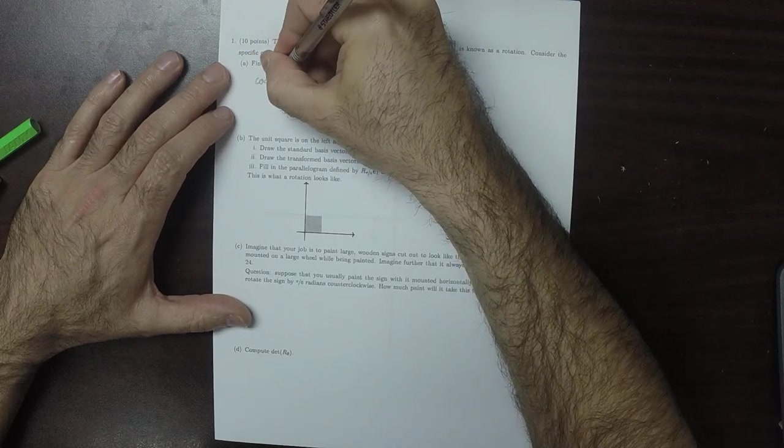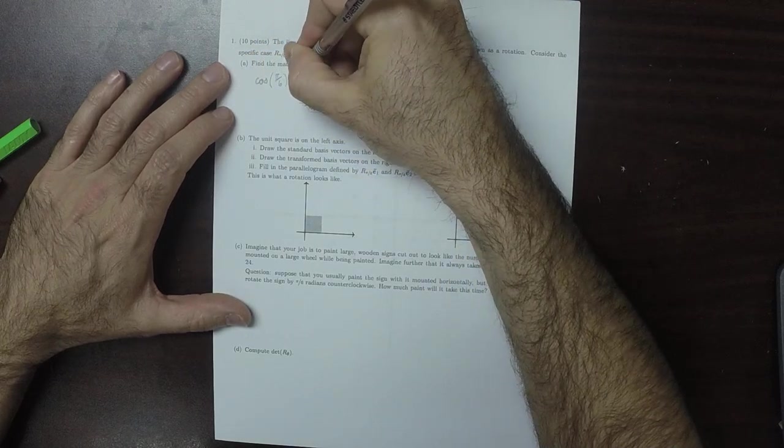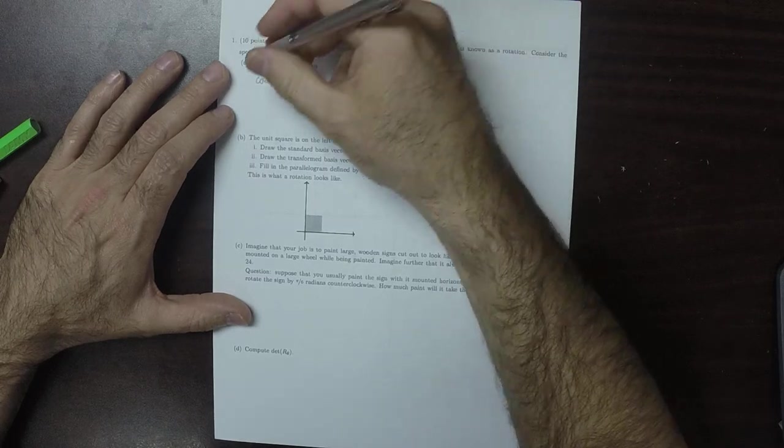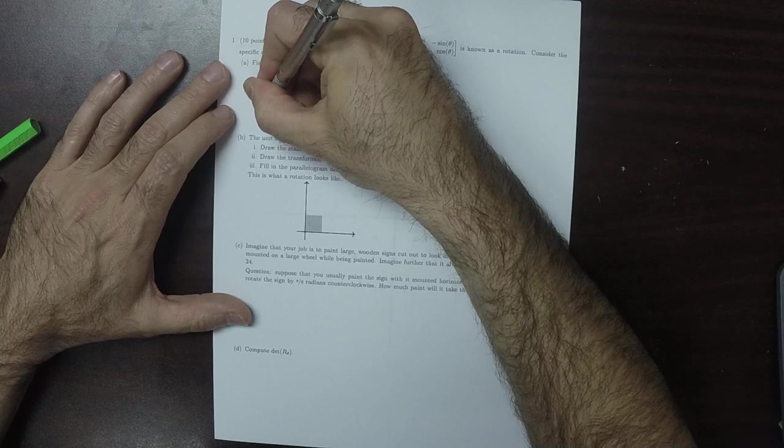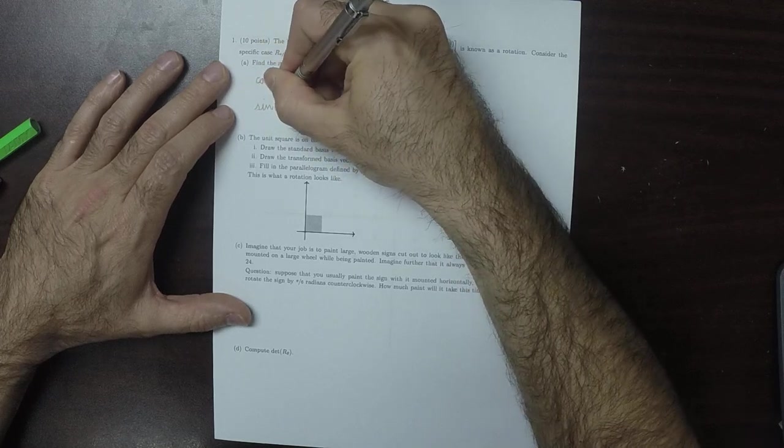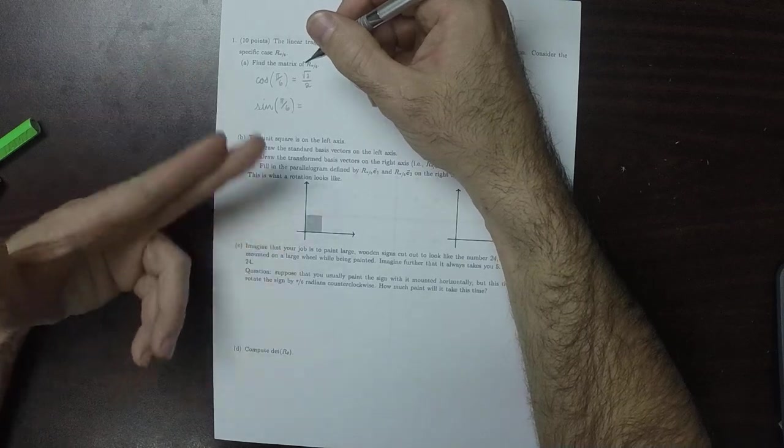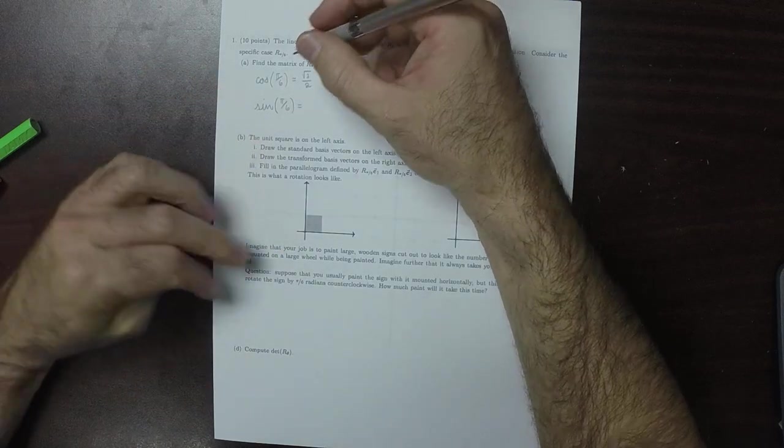Cosine of pi over 6 is square root 3 over 2, and sine pi over 6 is half.